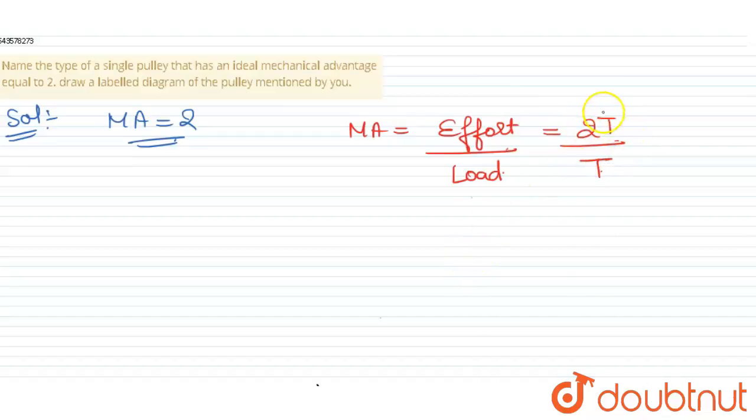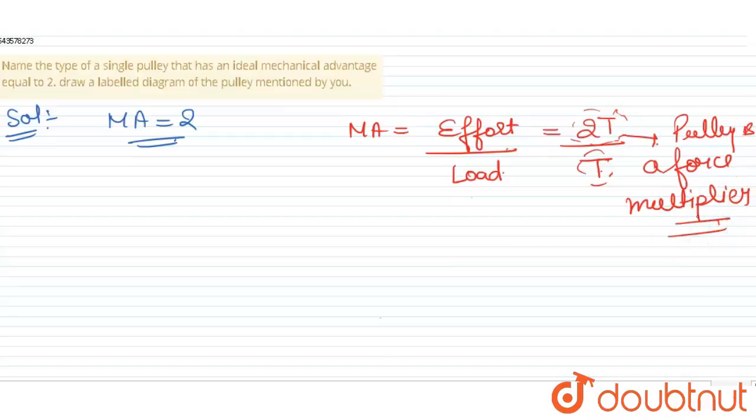Now what does this 2T and T mean? It means that the pulley is a force multiplier. Okay, it means it is doubling the force.